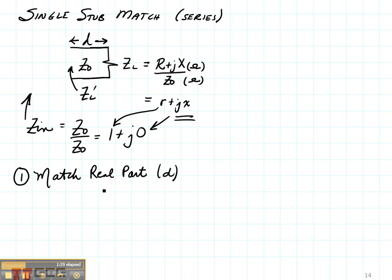Well, the way we can match the imaginary part is we can remove it. So we can remove the jx term which is now transformed. Now it's a jx prime.